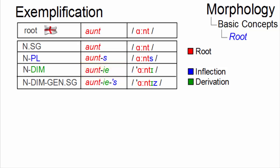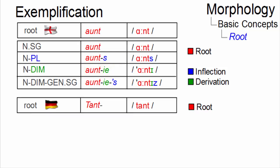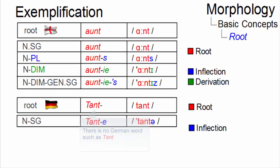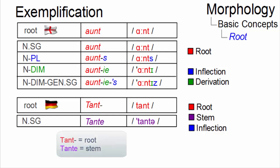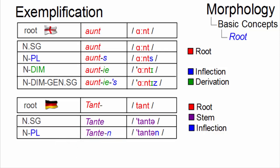In German, by contrast, roots are often different from actual word forms. The root of the German equivalent of 'ant' is not an existing word form. The singular noun is built by using the root and a suffix. Together, they form a new base form for all inflectional variants. This base form is not called the root anymore, but the stem. And this stem can be used to form the plural.